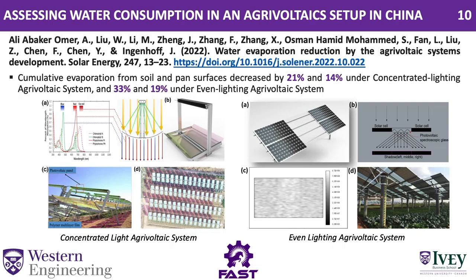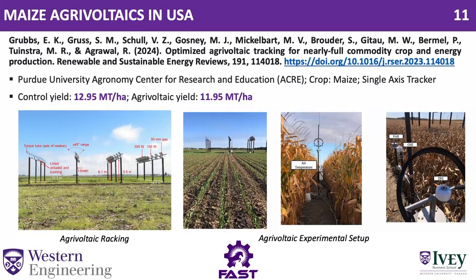Another study conducted in China focused on the water conservation aspects of Agrivoltaics through two different regimes. One was the concentrated Agrivoltaic system, using parabolic crops that direct sunlight towards a solar panel while allowing the red and far-red spectrum to pass through. The other was the even lighting Agrivoltaic system, using a specially made glass between two solar modules that disperses sunlight so that crops underneath the solar panels receive some light. Testing these two systems showed 14% to 33% water conservation is possible.